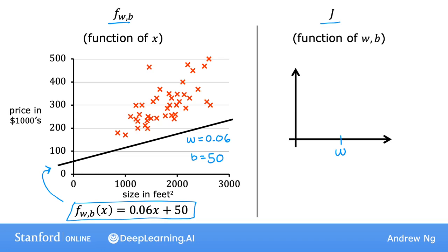Back then, we had come up with a plot of the cost function that looked like this as a function of w only. So when we had only one parameter w, the cost function had this u-shaped curve, shaped a bit like a soup bowl.